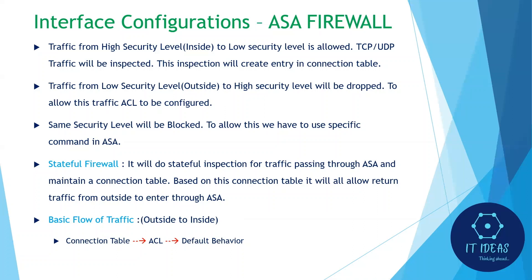By default, outside-to-inside traffic is not allowed. When traffic hits the outside interface, the ASA checks the connection table first. If there is an entry, traffic is allowed. If not, it checks ACLs — if a permit ACL exists, the traffic is allowed. If no ACL permits it, the default behavior applies: traffic from low security level to high security level is dropped.